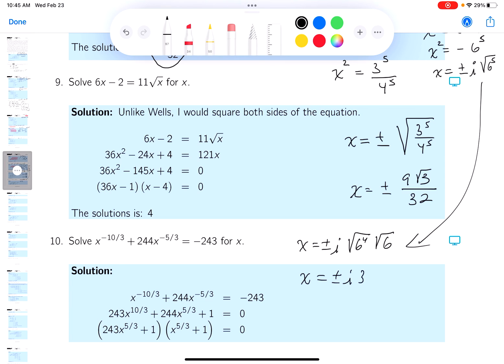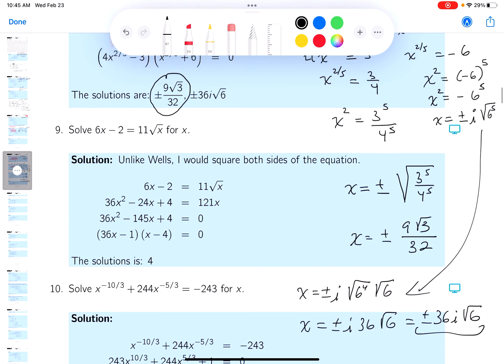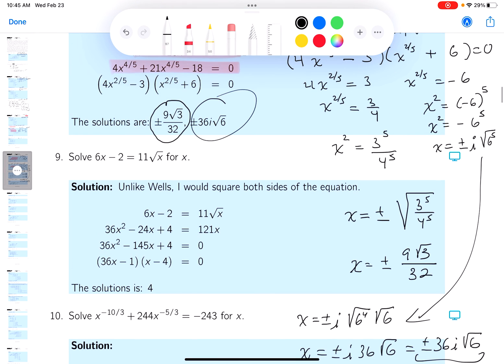What do you get over here? x equals plus or minus. Well, that would be 6 squared, which is 36 root 6. Let me clean it up. Plus or minus 36i root 6. Let's see if we got that answer. And I'm staring at that answer over there.